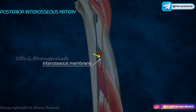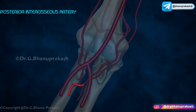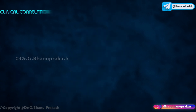The posterior interosseous artery passes over the top of the superior border of the interosseous membrane to its posterior side, where it emerges from beneath the supinator muscle in the posterior forearm compartment, adjacent to the posterior interosseous nerve. It gives off an interosseous recurrent artery which participates in the anastomosis around the elbow joint.